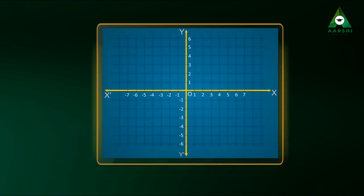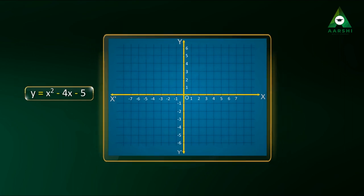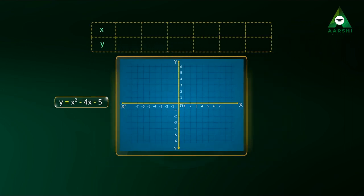Draw a graph for y equals x square plus 4 x minus 5. Now let us note down a few values.